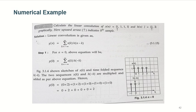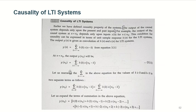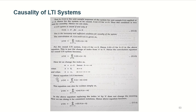In the last lecture when we discussed causality and stability of a system, we found the condition for a system to be causal: the unit sample response must be equal to zero for all values of n less than zero. Based on that, the output of a causal system becomes: y of n equals summation from k equals zero to infinity of h of k times x of n minus k.